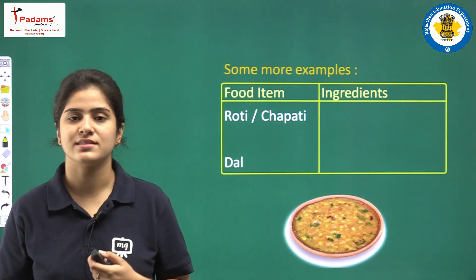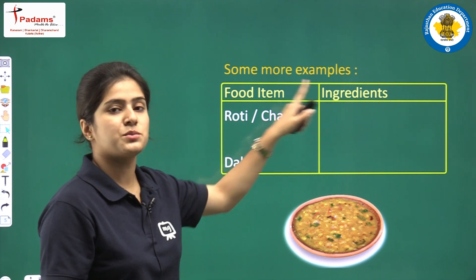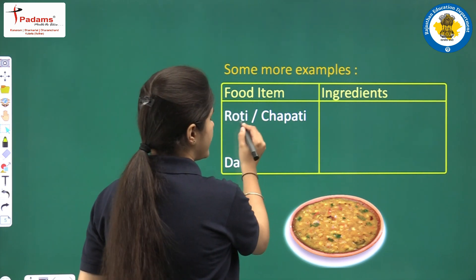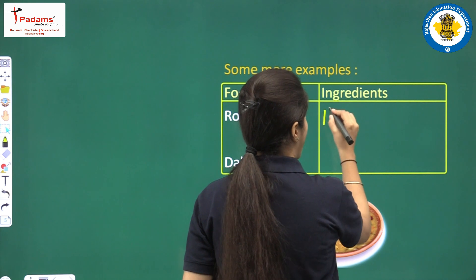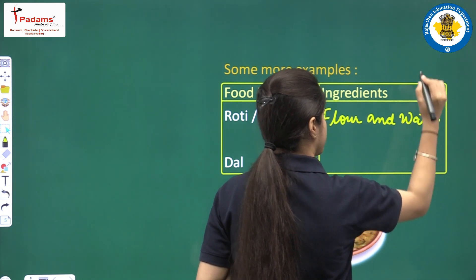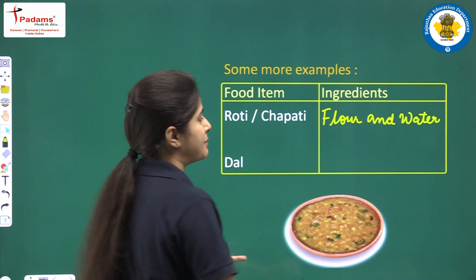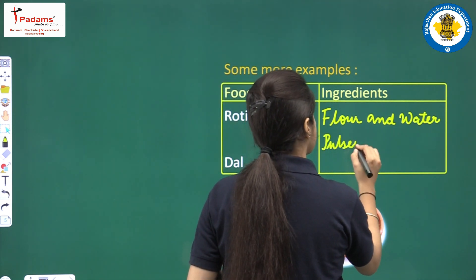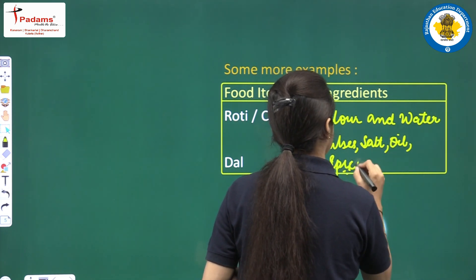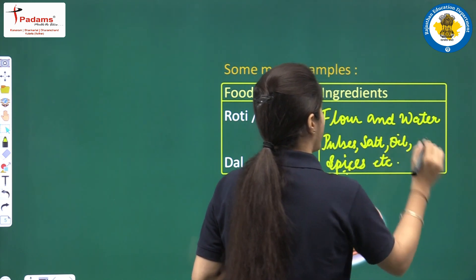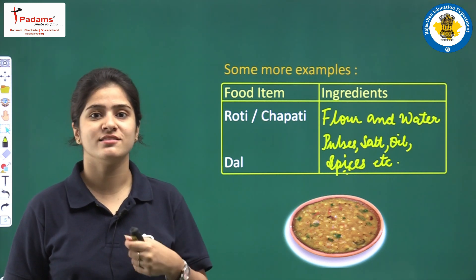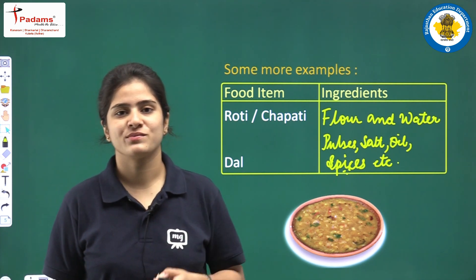We will see some more examples. These are the food items and these are the ingredients. For making roti, we require flour and water. For making dal, we will be requiring pulses, salt, oil, spices, etc. And if I want to put tadka over the dal, I will be needing garlic, tomato, ginger, onion, and things like that.